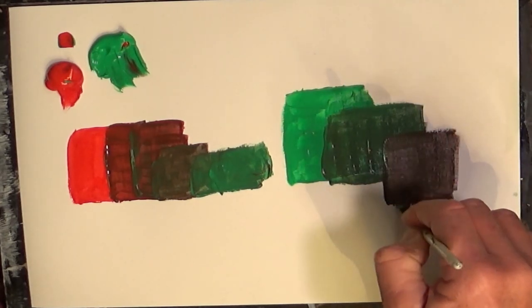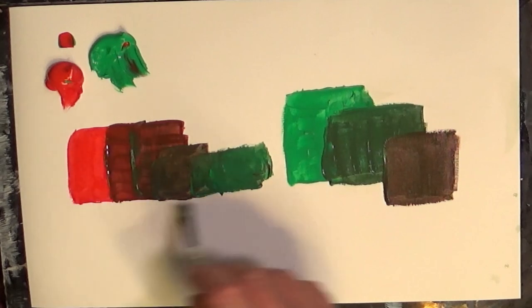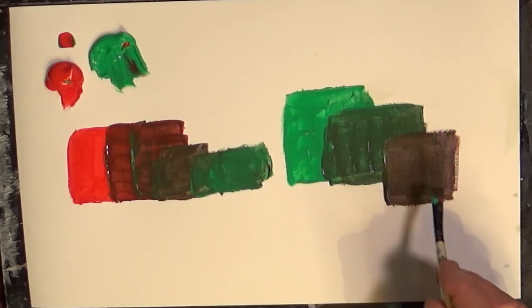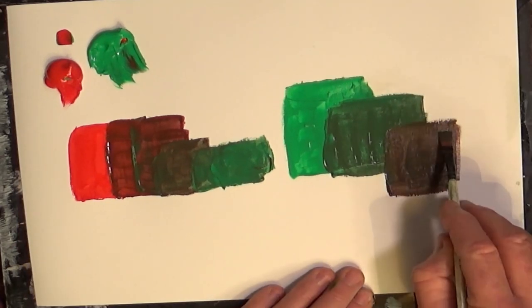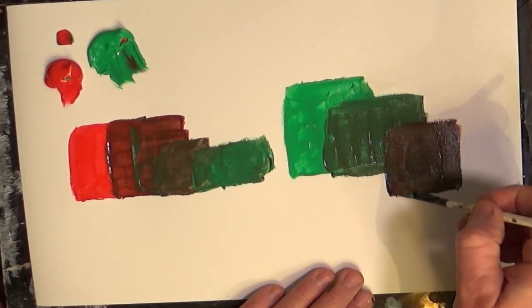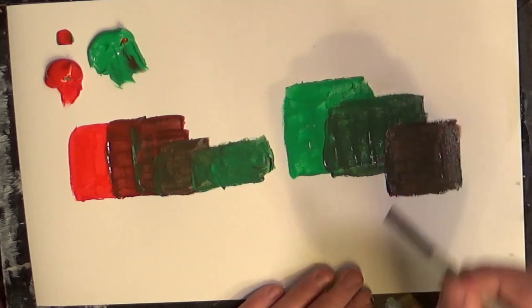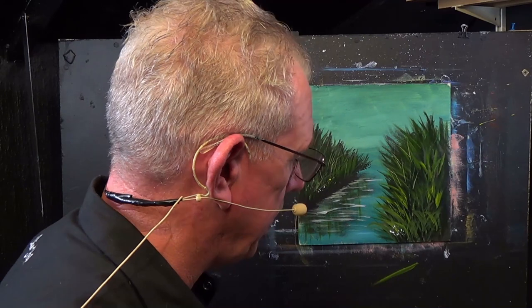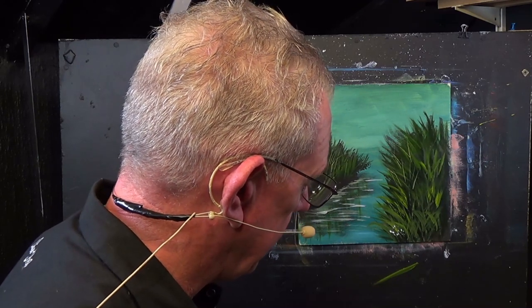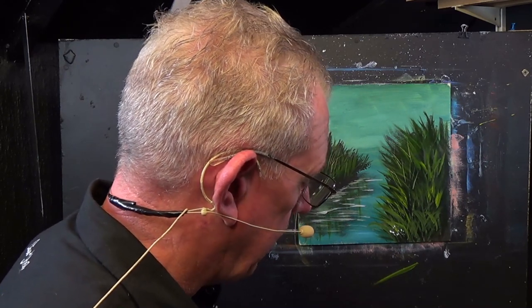Now in a previous lesson I showed you how to do tints, tones, and shades. So you could use white to tint any of these, or you could use black or gray to do your shades or your tones. But that is a wonderful way I've shown you very quickly that complements actually are used to gray out colors.